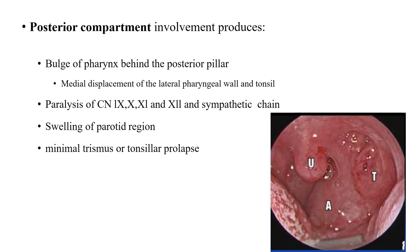Posterior compartment involvement produces a bulge of the pharynx behind the posterior pillar, paralysis of cranial nerves 9th, 10th, 11th, and 12th, and involvement of the sympathetic chain — which are the contents of this space — along with swelling of the parotid region. However, trismus is minimal.